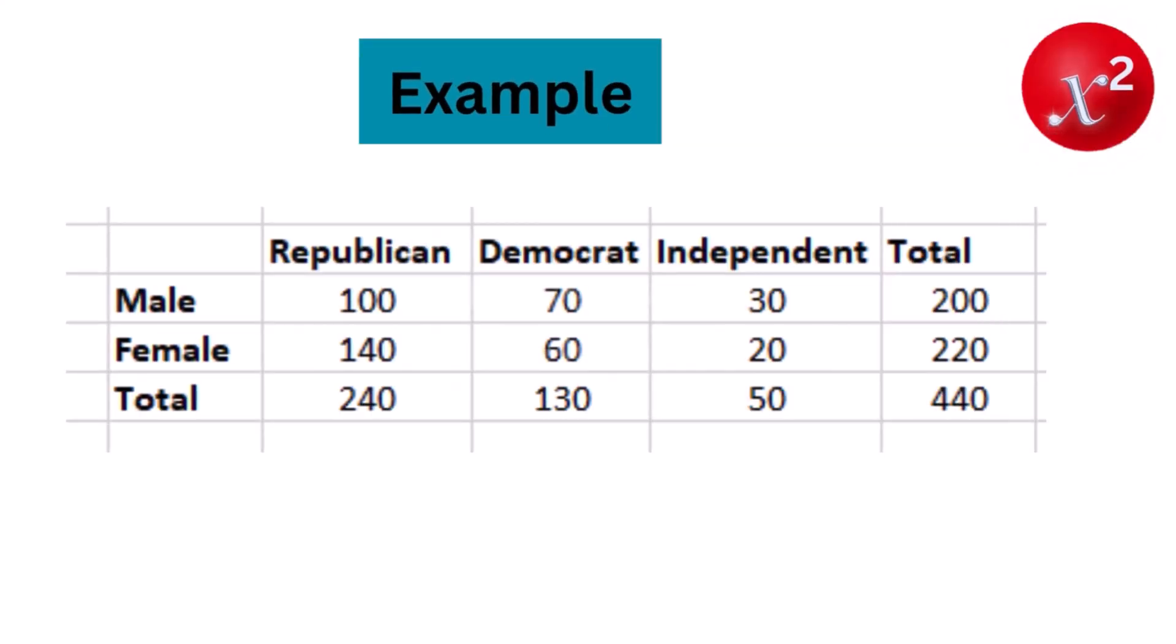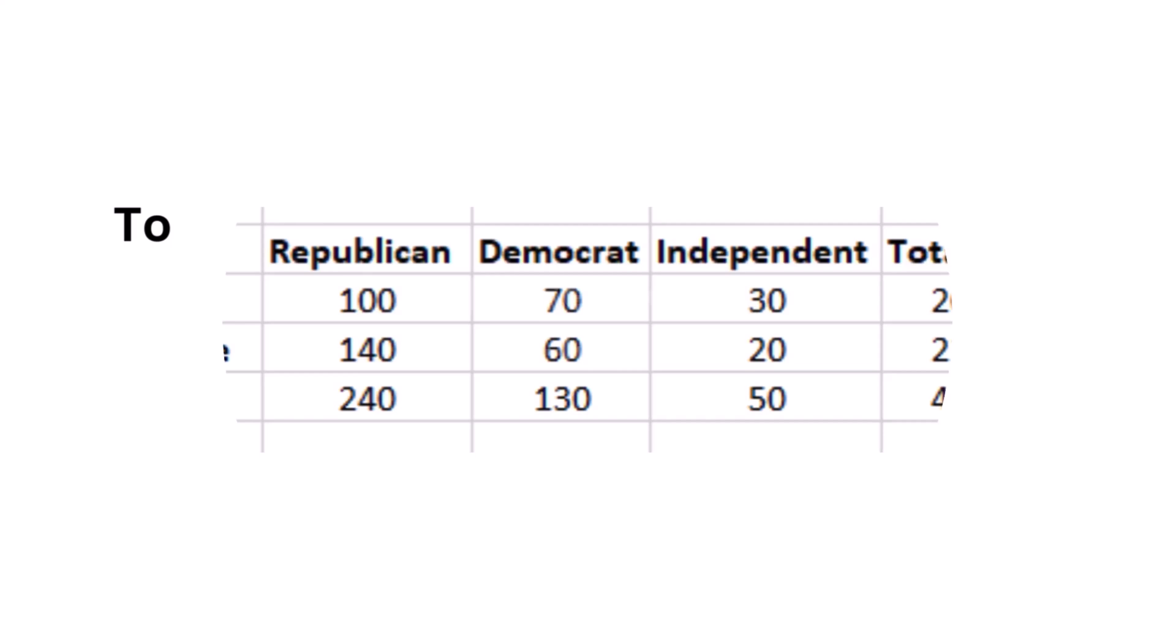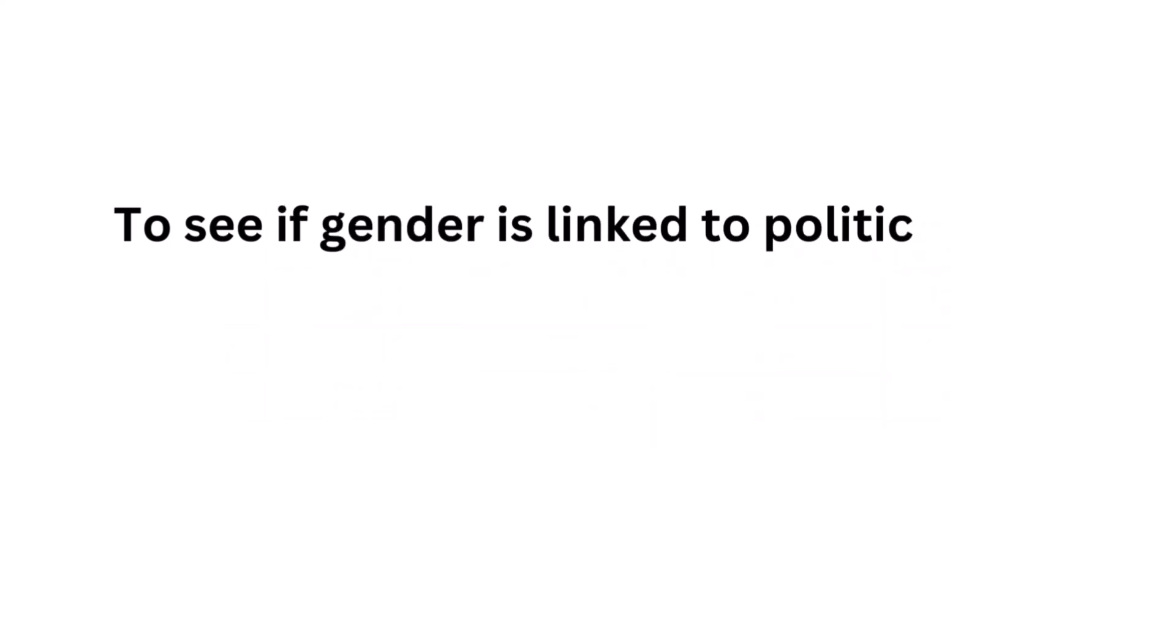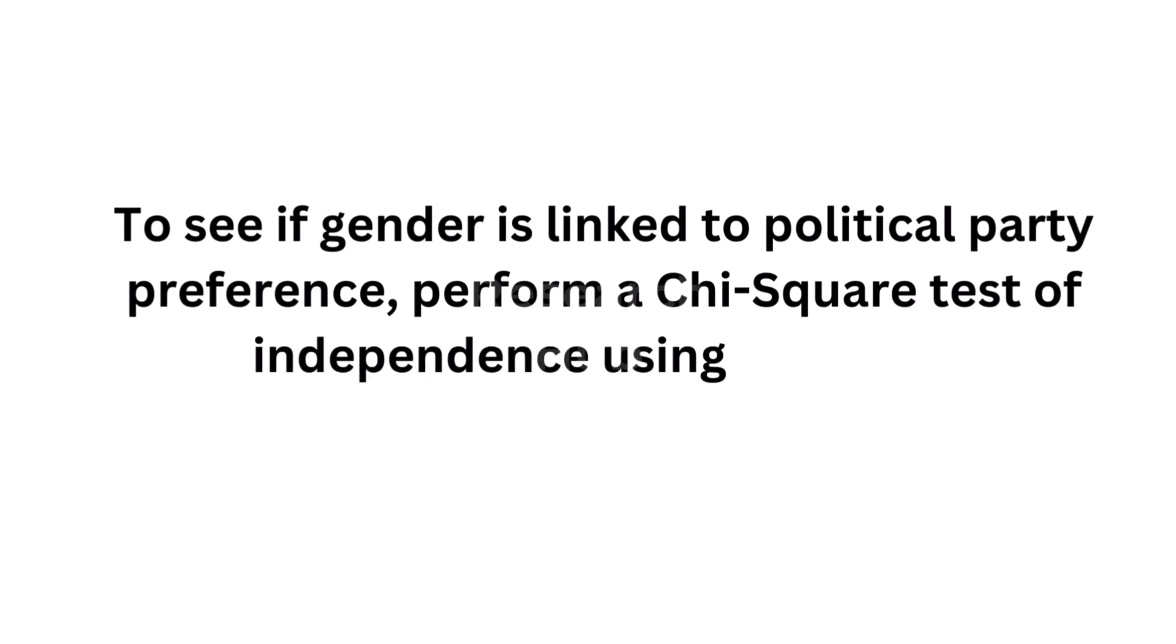Let's say you want to know if gender has anything to do with political party preference. You poll 440 voters in a simple random sample to find out which political party they prefer. To see if gender is linked to political party preference, perform a chi-square test of independence using the steps.